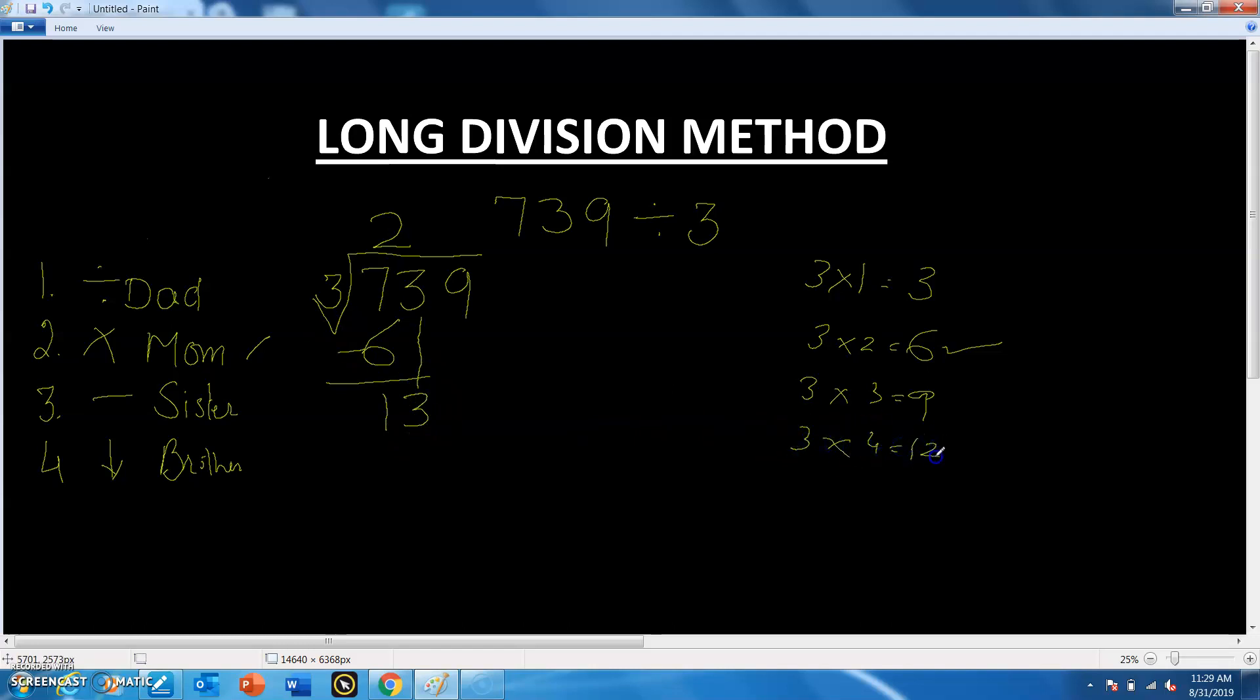3 fours are 12, 3 fives are 15. If we see here is 13, 12 is less than 13 and 15 is more than 13, so 12 will come under 13.